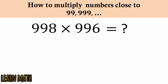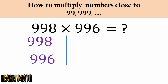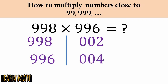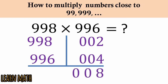The third example uses numbers close to 1000: write 998 and 996. You subtract from 1000: 1000 minus 998 is 2, 1000 minus 996 is 4. Multiply 4 with 2 to get 8. Then 998 minus 4 or 996 minus 2 is 994. So the answer is 994008.